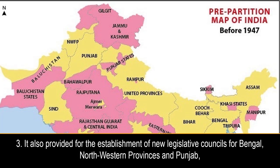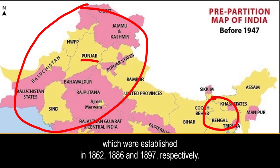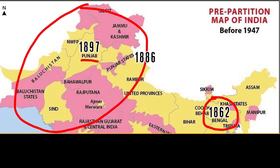Feature 3: It also provided for the establishment of new legislative councils for Bengal, Northwestern Provinces, and Punjab, which were established in 1862, 1886, and 1897 respectively.